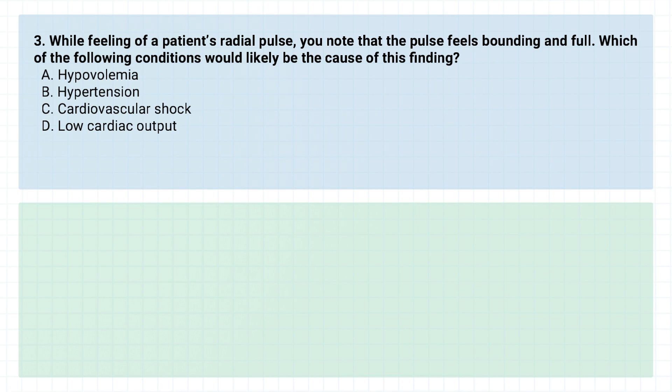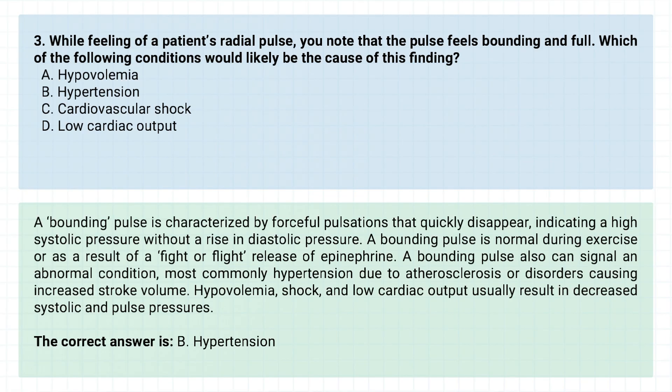Question number three. While feeling a patient's radial pulse, you note that the pulse feels bounding and full. Which of the following conditions would likely be the cause of this finding? A. Hypovolemia. B. Hypertension. C. Cardiovascular shock. D. Low cardiac output. The correct answer is B. Hypertension.